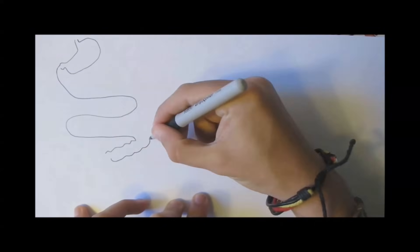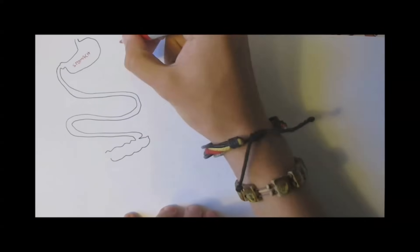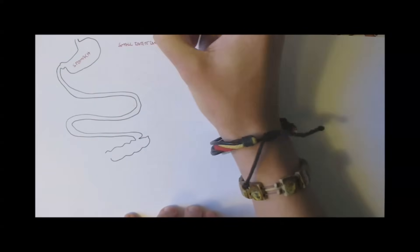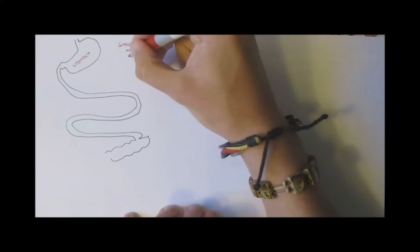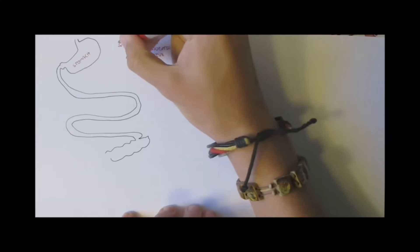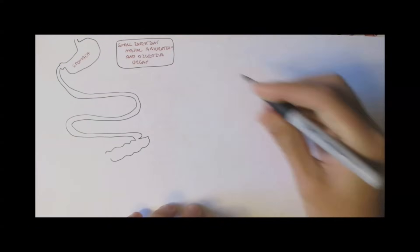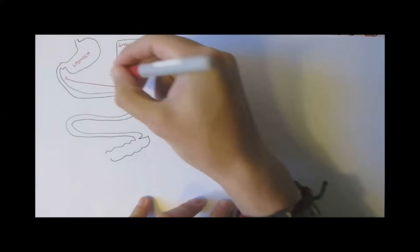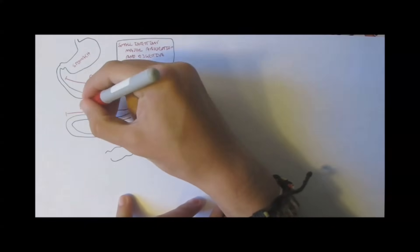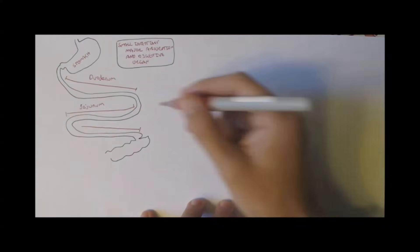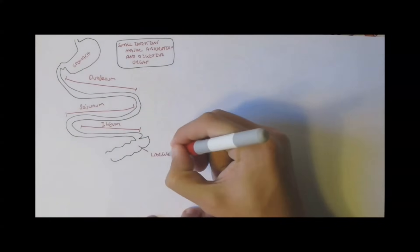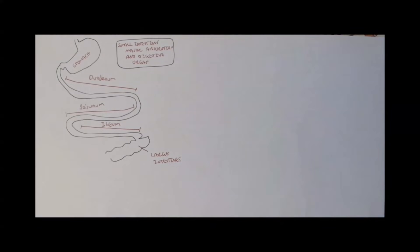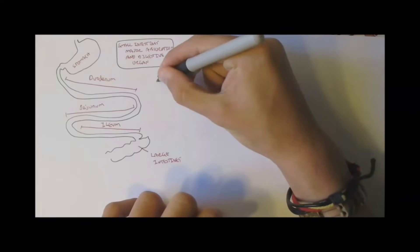The small intestines follows from the stomach and is the major part of digestion and absorption in the digestive system. It is comprised of three main parts. The duodenum, the jejunum, I hope I'm pronouncing this right, and the ileum. And the ileum then connects to the large intestines. So, most of the digestion and absorption actually occurs in the first part of the small intestine, the duodenum.